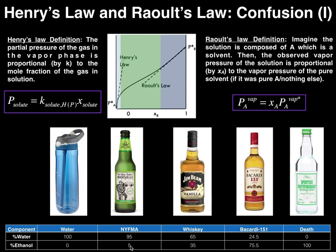Now let's increase the amount of ethanol a little bit. We've got — this is really good by the way — Not Your Father's Mountain Ale, 5% ethanol, 95% water. If we consider species A as being ethanol, do you think this would be under Henry's Law or Raoult's Law? Well, if our A species is ethanol, then this would probably be under the control of Henry's Law, because the solute — meaning our species A — has a very low mole fraction relative to the solvent water. So we're probably in this light blue region on the curve, under Henry's Law's control. This would probably satisfy the Henry's Law component of the ideal dilute solution definition.